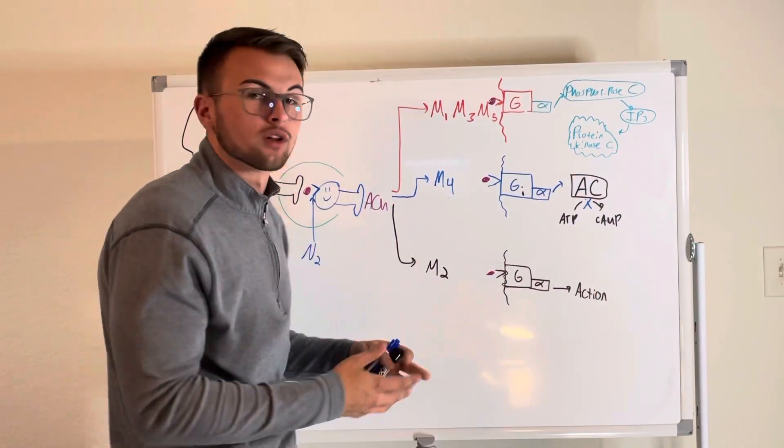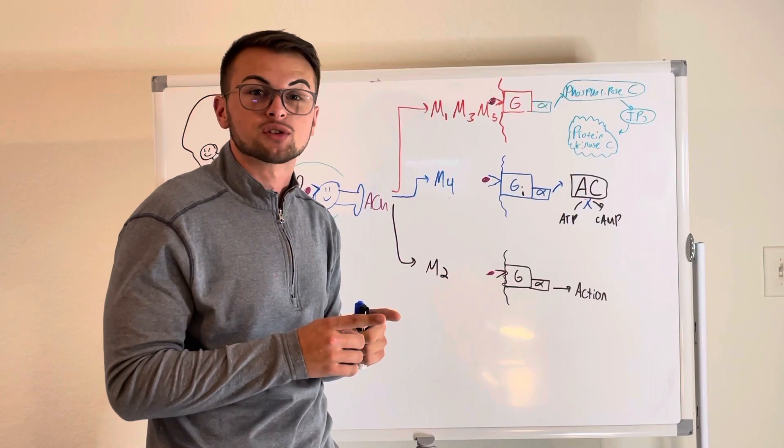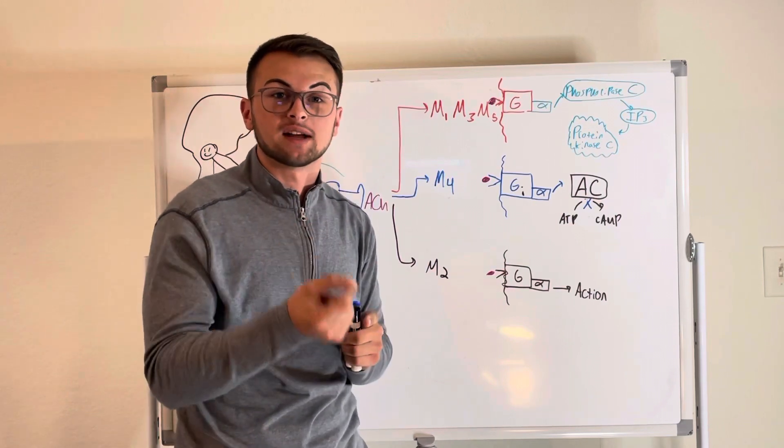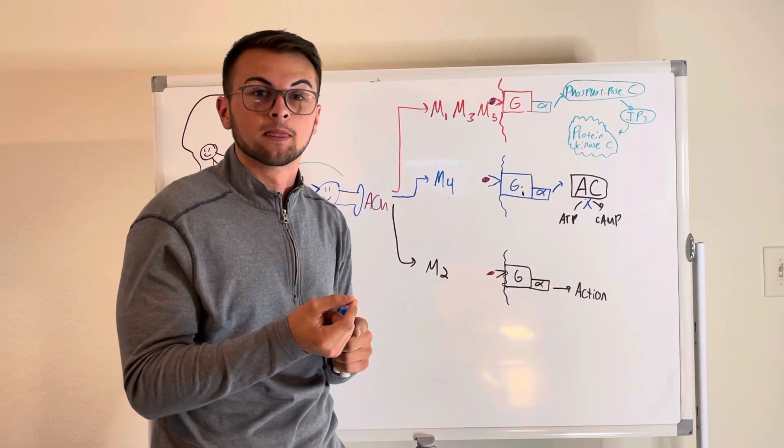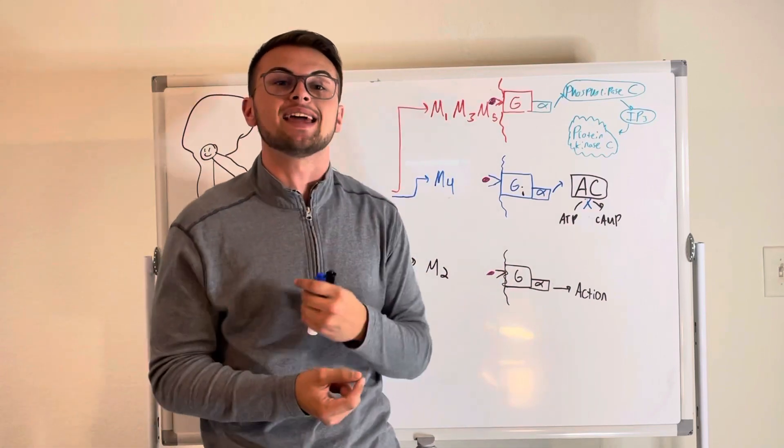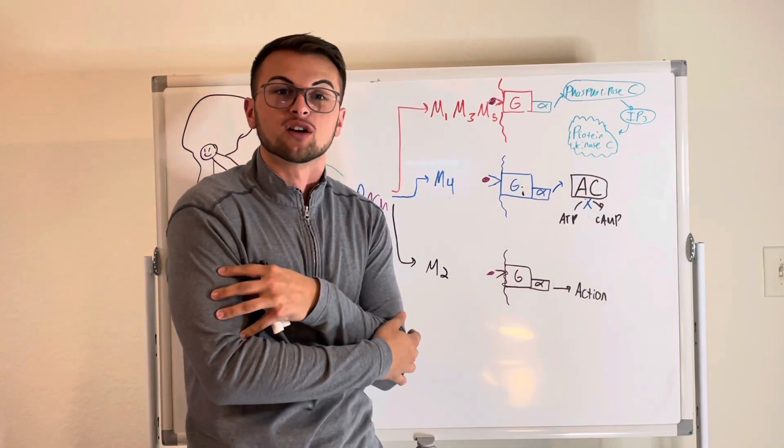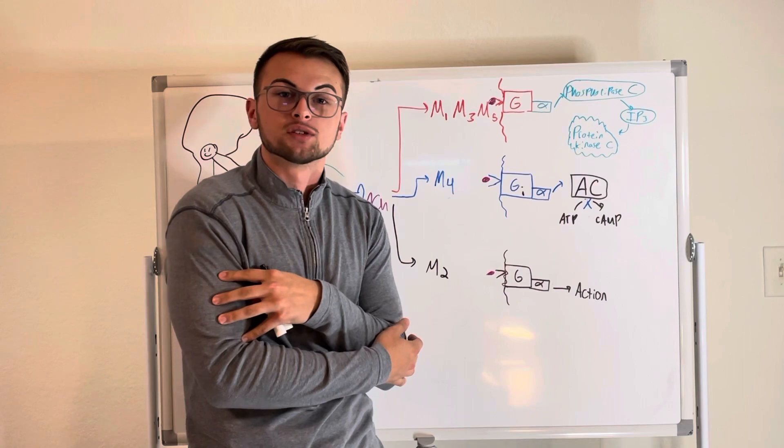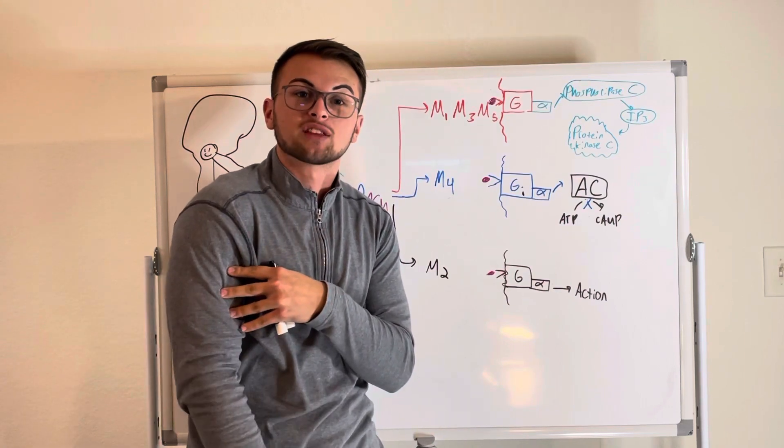So what have we learned? We've learned that nicotinic and muscarinic receptors are all activated by acetylcholine. That is the commonality. Now, where it gets different is that N1 receptors are located in our skeletal muscle. When we block those, they become flaccid. When we activate, they contract.